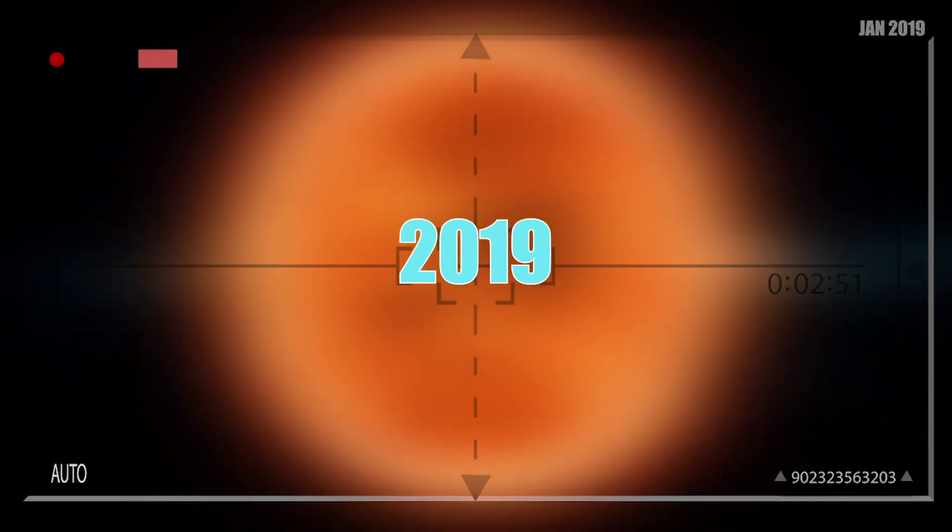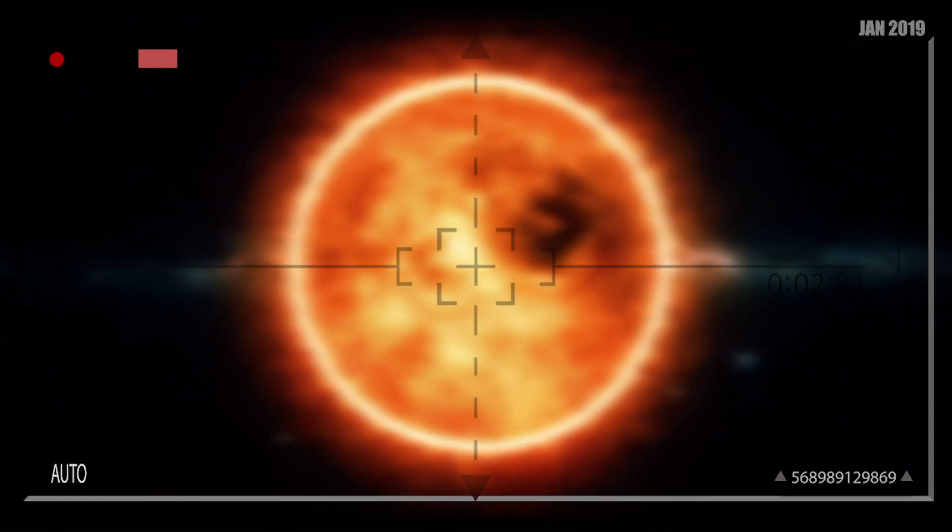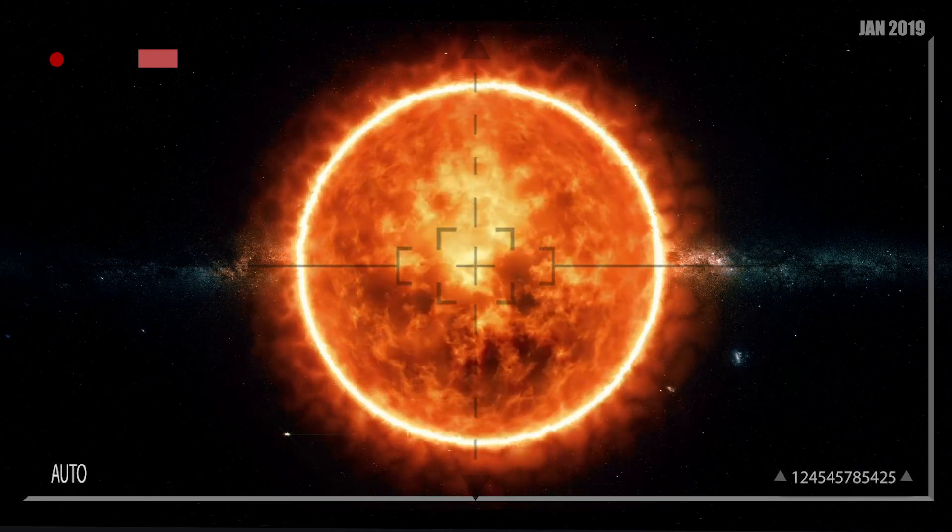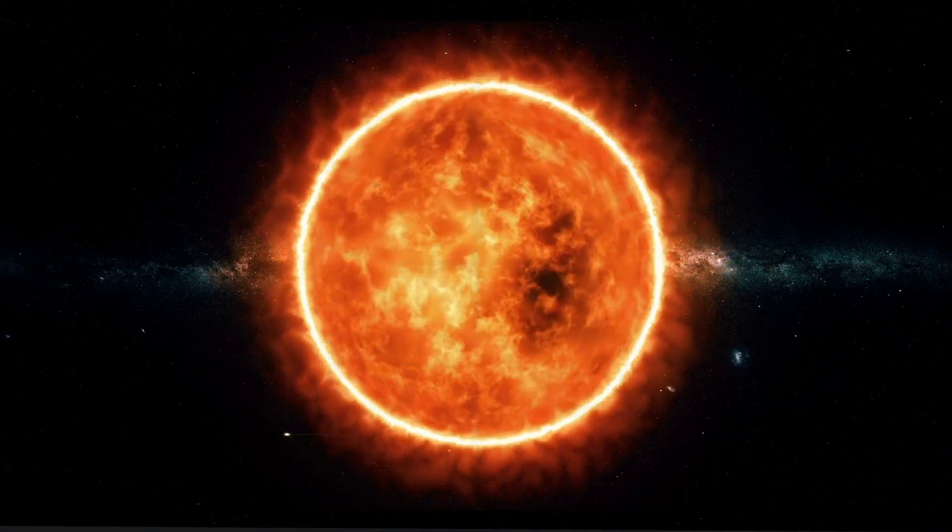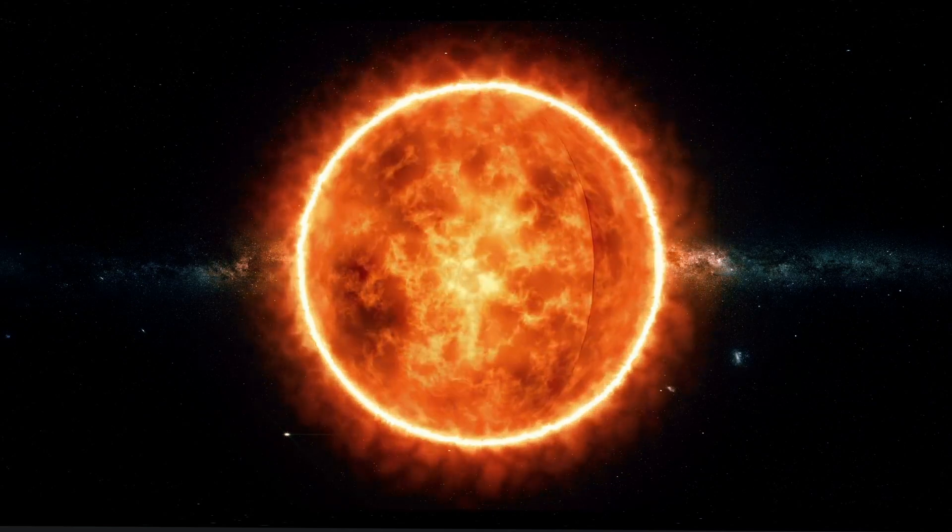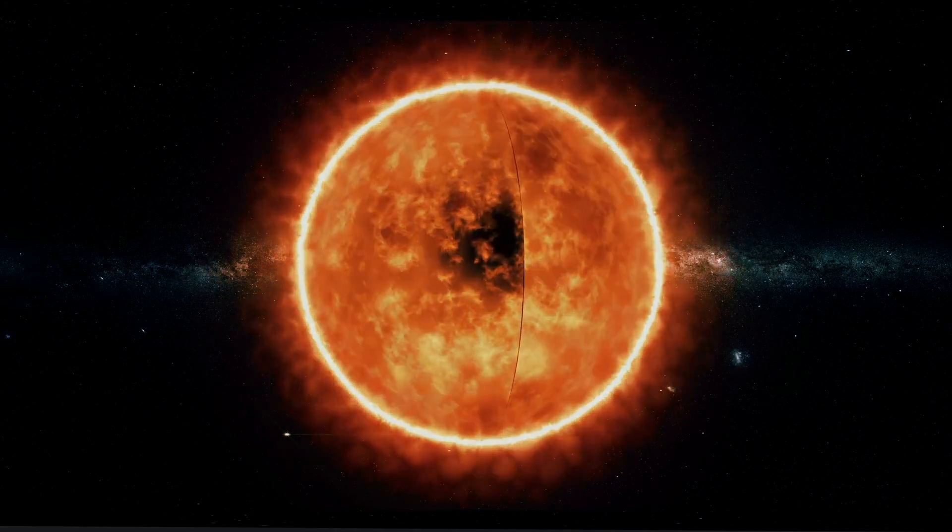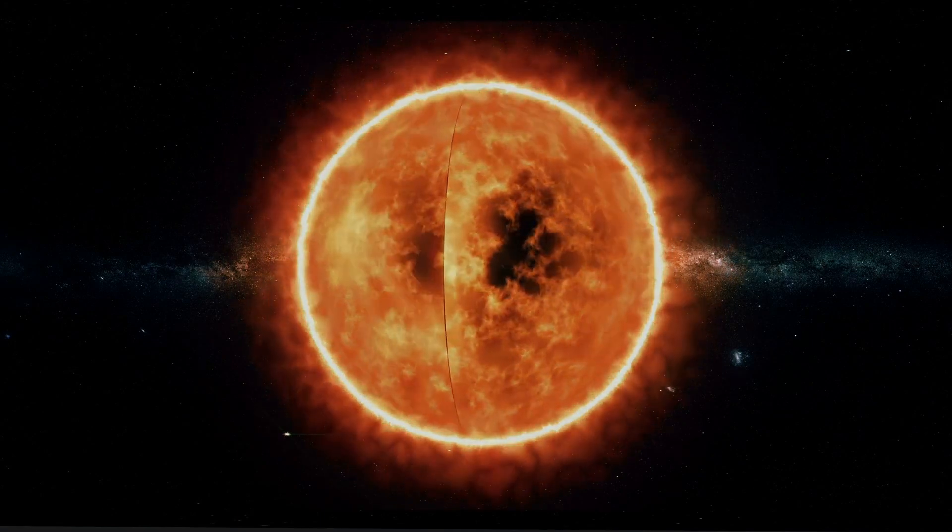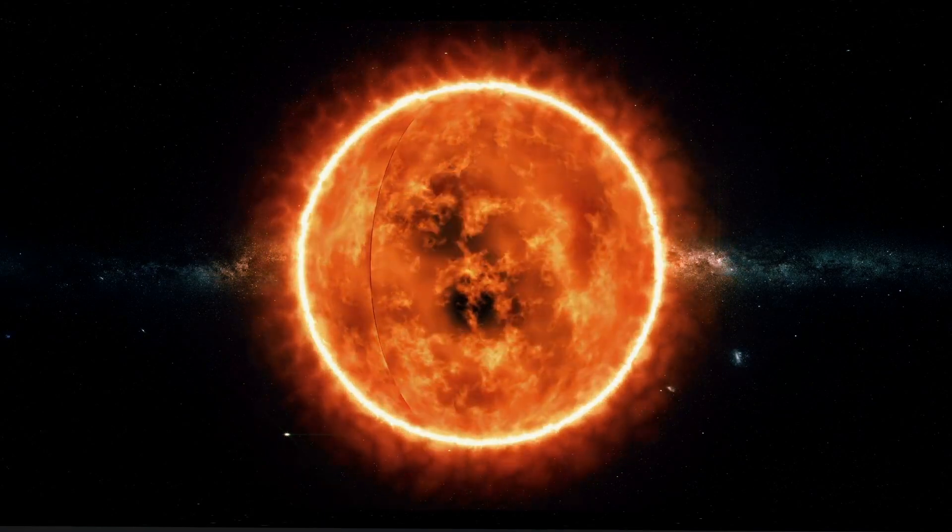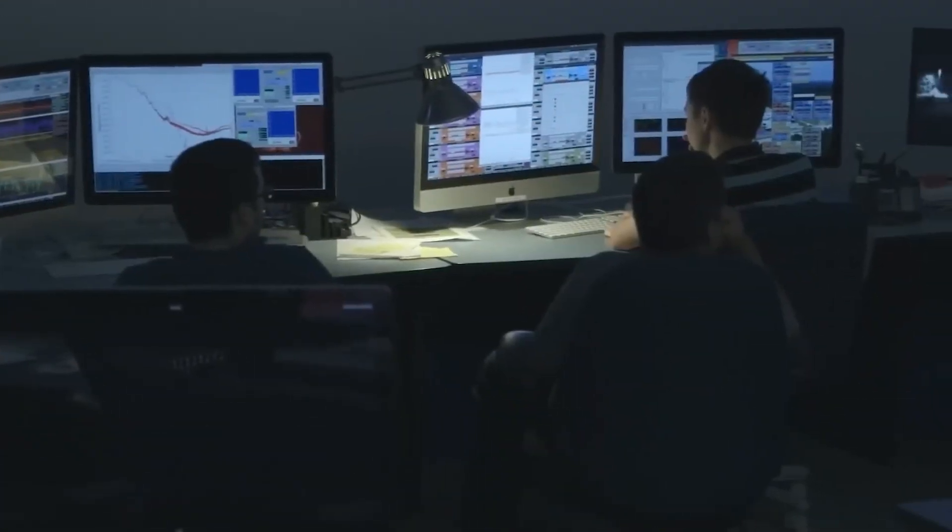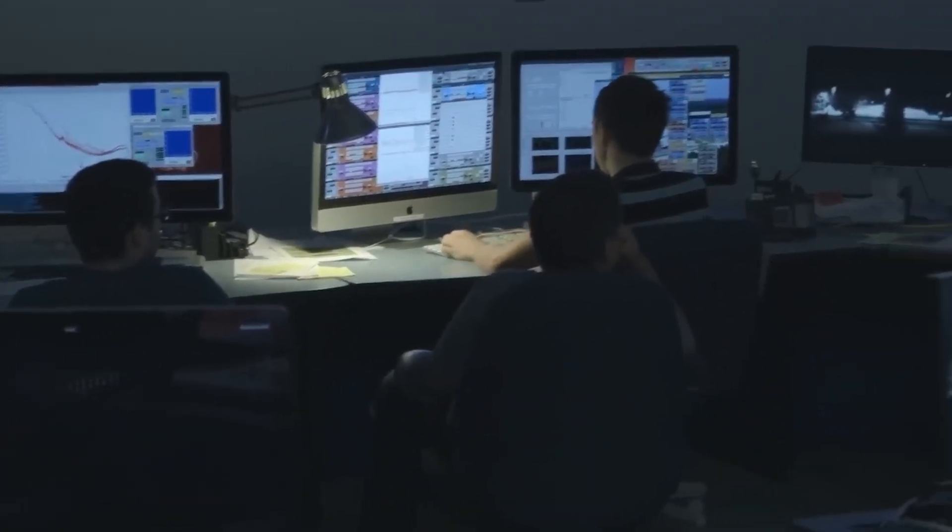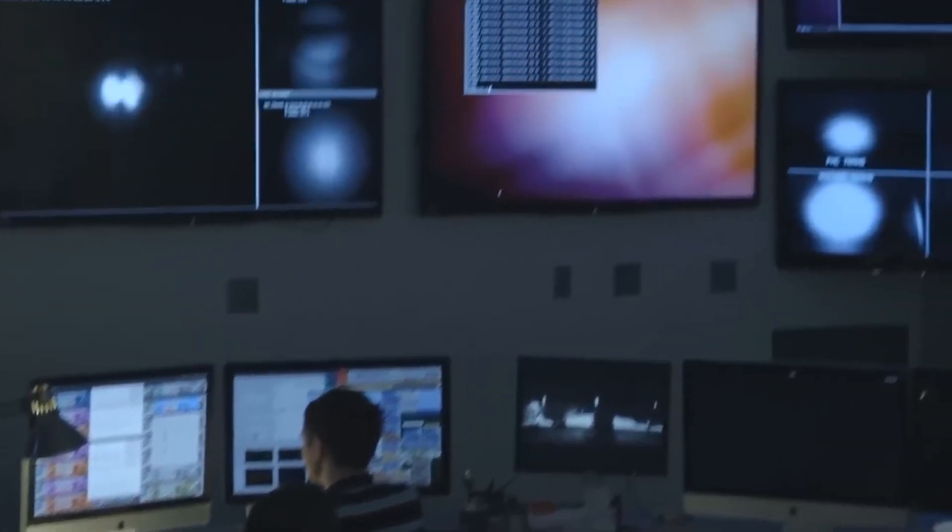The year was 2019, and the world's attention was unexpectedly drawn to Betelgeuse as it began to exhibit a curious and dramatic change in behavior. Its brightness, which had been relatively consistent for centuries, suddenly started to diminish at an alarming rate. This unprecedented event became known as the Great Dimming, and it sparked a frenzy of speculation and concern among both astronomers and the general public.